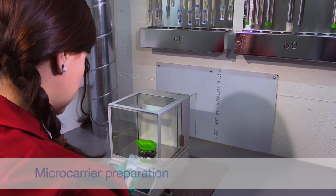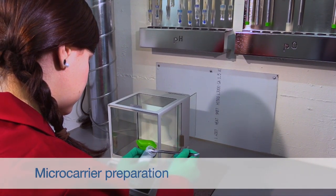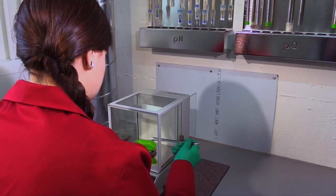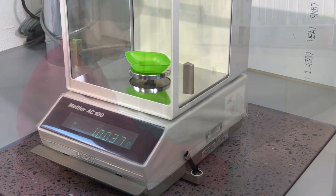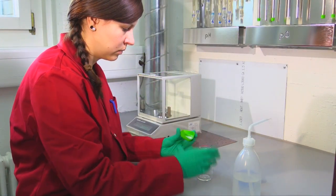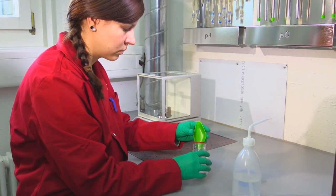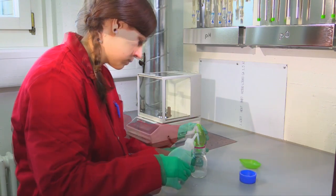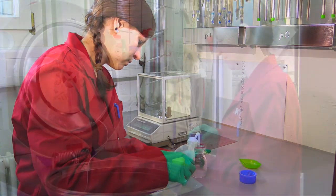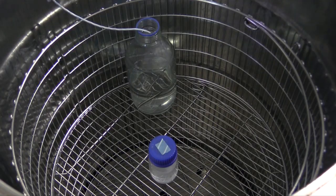In a first step, the selected polystyrene-based microcarriers must be prepared. The required solid fraction of carriers, in our case 0.01%, is weighted on an analytical balance and prepared according to the manufacturer's advice. Afterwards, they are sterilized in the autoclave.